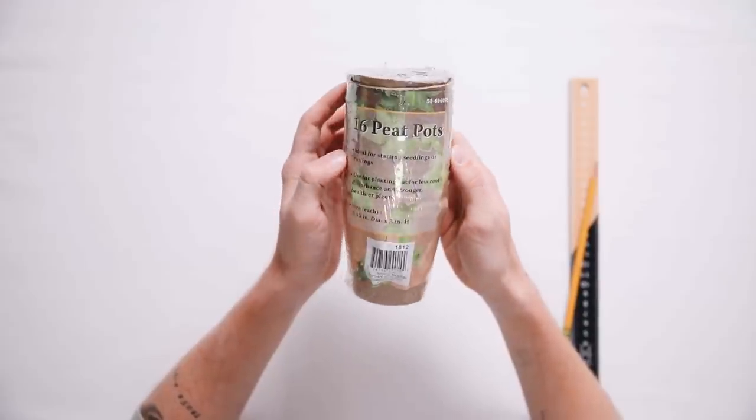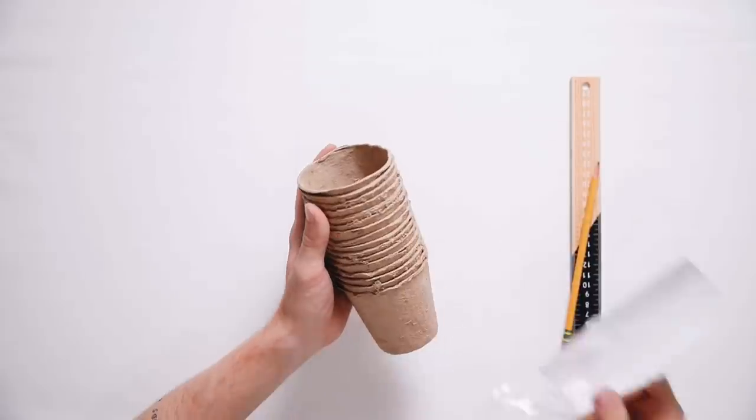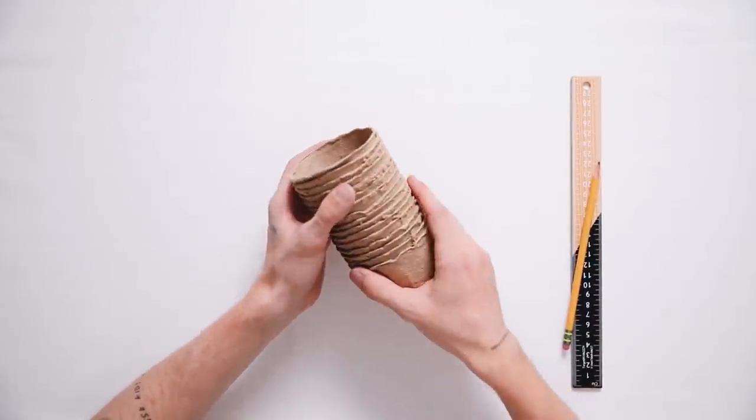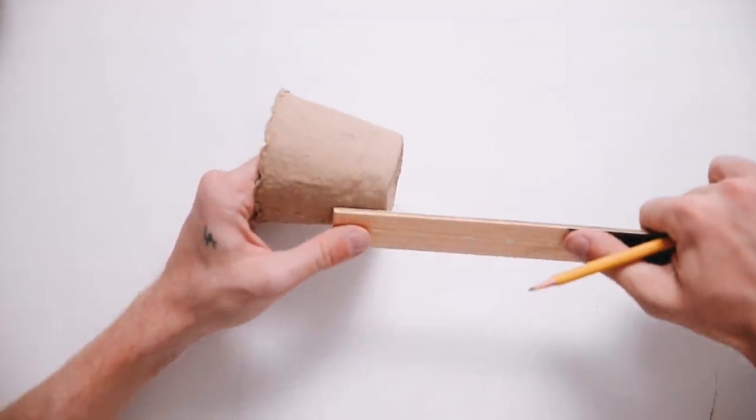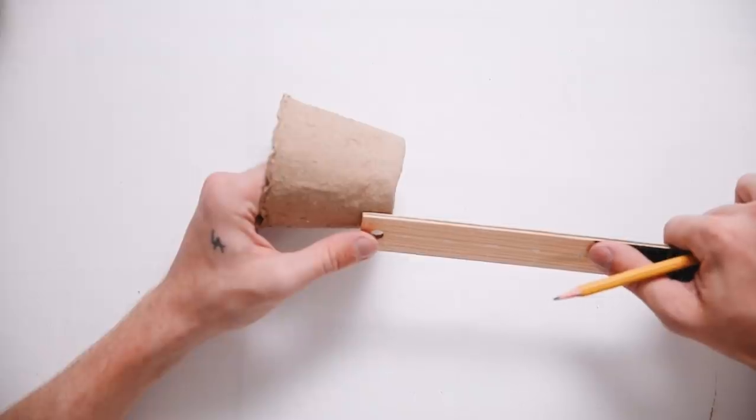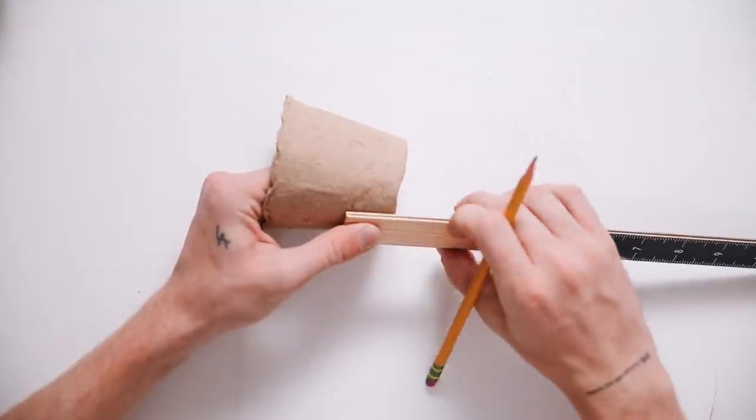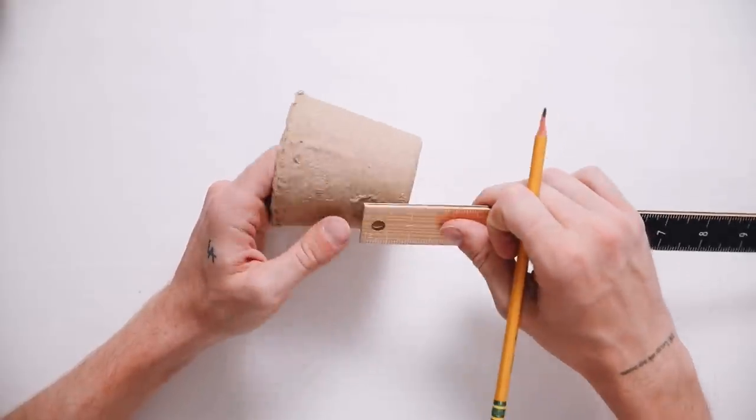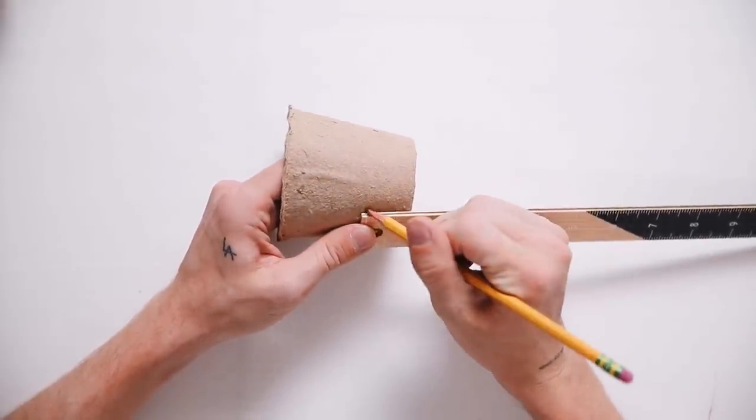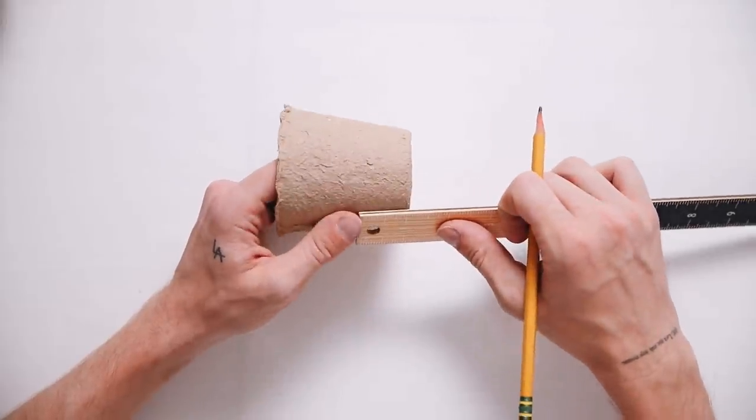So jumping into project number two, I'm using what's known as a peat pot. I found these at the dollar store. You get 16 of them for a dollar. But they're basically just like little seed potters that you use to plant seeds. And they kind of grow from here. And then you can plant them in a larger area. But I thought I would use it to create an organizational item. So I'm using a ruler and a pencil, and I'm just going around the bottom edge and marking one inch up from the bottom.